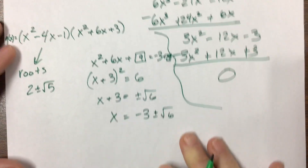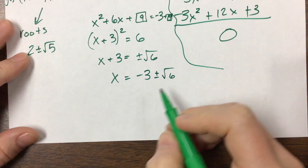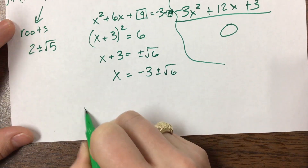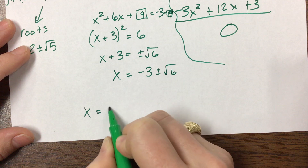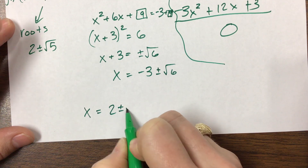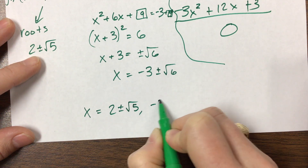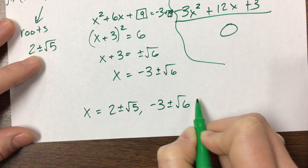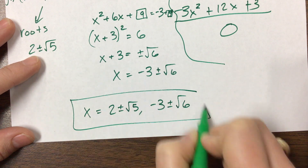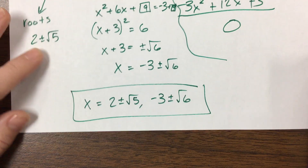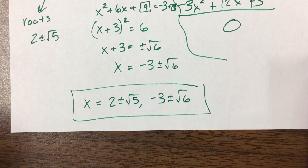So when I say find all roots — that quartic had, as we expected, four roots.